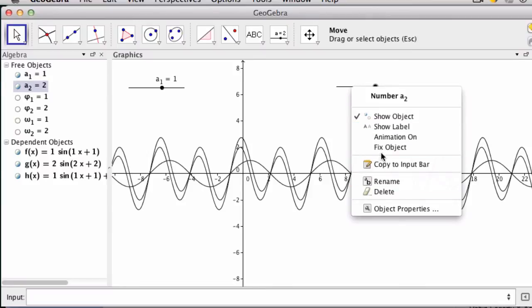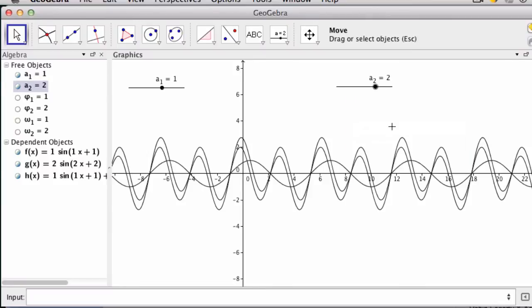Again, I'll label it. You want to label all these. Show label, and then write phi sub one, that's the phase. I'll put that over here and show label, and phi sub two.